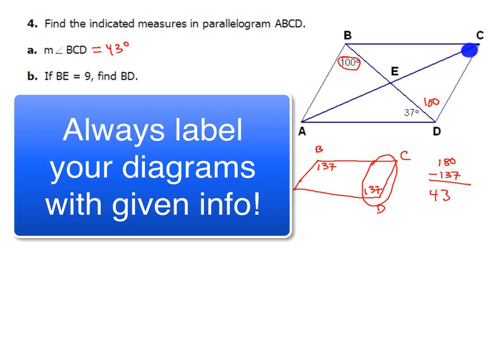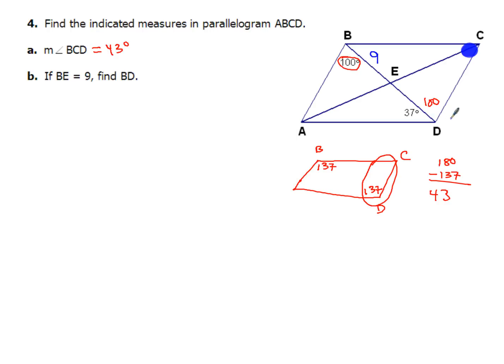Now for part B, it says that BE equals 9, so let me write that in my picture. So from B to E, that's 9. I've got to find from B all the way to D. Well what do we know about diagonals of a parallelogram? They chop each other in half, they bisect each other. So that part and that part, both of those are 9. So from B all the way to D, well that's easy to add up and you can do that mentally. BD has a value of just 18.